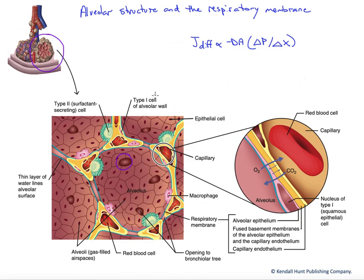The alveolar walls are constructed of these squamous cells known as type 1 cells. They are helping to minimize our diffusional distance, as we'll see in a moment.